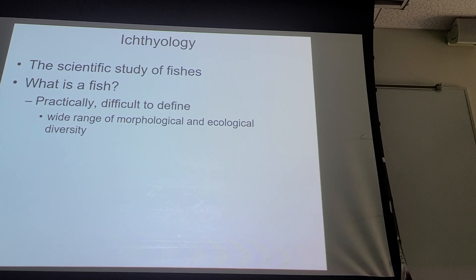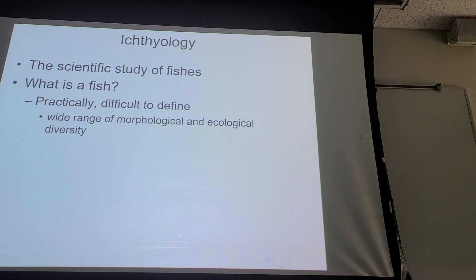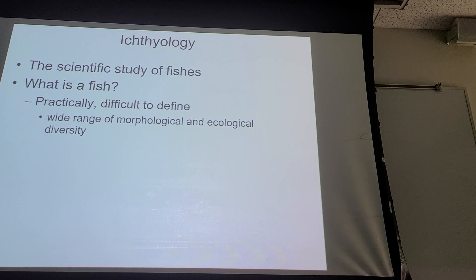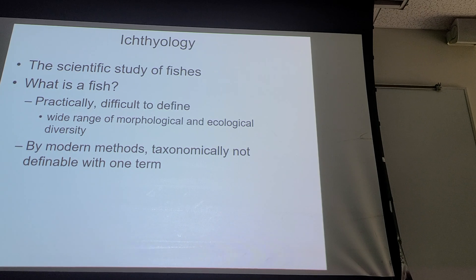So if we think about what constitutes a fish, it's really hard to define, practically speaking, and that's because there's a really extreme range of morphological features — basic features that we use to describe animals. Some fish don't have jaws that move, others obviously do. Some basic morphological features of animals we call fish are so widely variable they don't fit practically into the group very well, and also their ecologies are really wide-ranging.